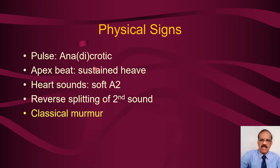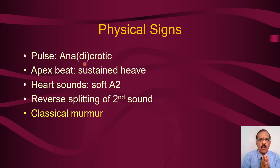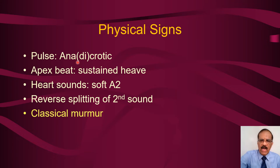The symptoms I have already covered: history of syncope, angina, and dyspnea. Regarding signs: when you examine the pulse, you may find an anacrotic pulse — a pulse which is low in volume but bifid, having two peaks. It was initially called anacratic but now we call it anacrotic. I must admit this may not be an easy sign to pick up.